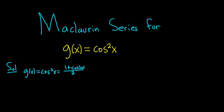Then we can break this up. It's 1 over 2, plus cosine 2x over 2.